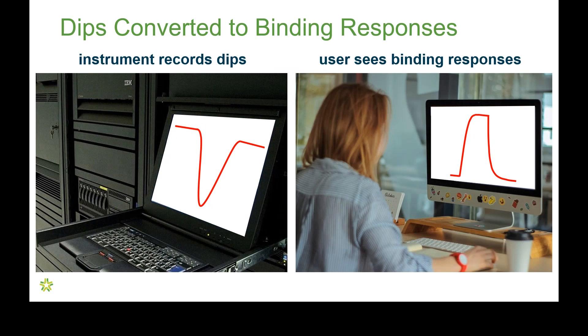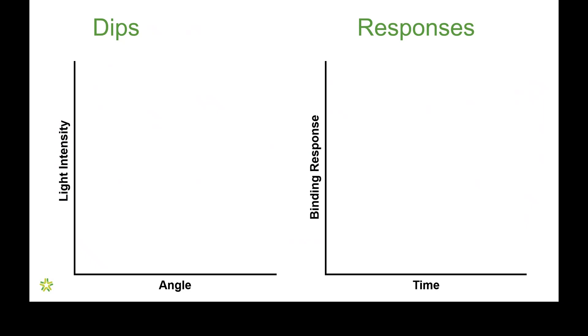Now, the instrument records dips, but what we as biosensor users see are binding responses. So, now I'm going to talk a little bit about how the dips and where they fall in that range of angles translates into what we see as binding responses. So, here on the left will be dips plotted as intensity versus angle, and on the right are binding responses plotted as a function of time.